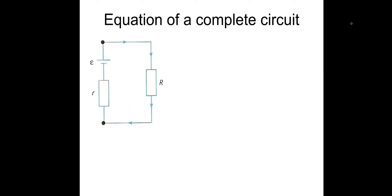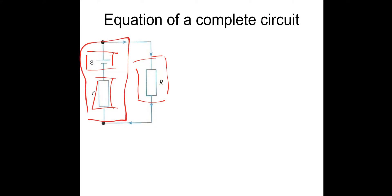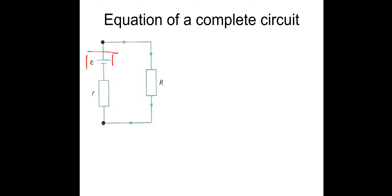The equation of a complete circuit: the EMF can be seen as the total voltage available. We have a certain amount of voltage available to be used in the circuit, and some voltage that will be used up in the internal resistance of the power supply. So the total voltage — the EMF — equals the voltage available in the circuit, the terminal PD, plus the lost volts.